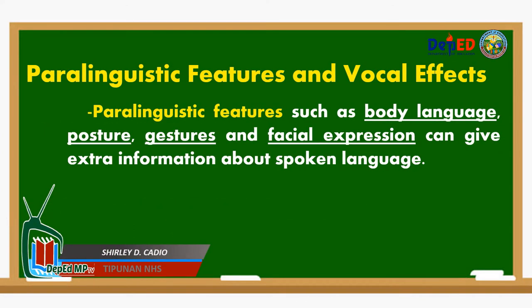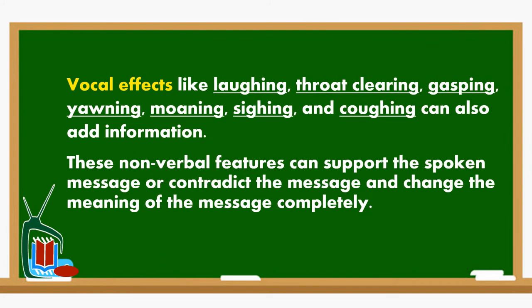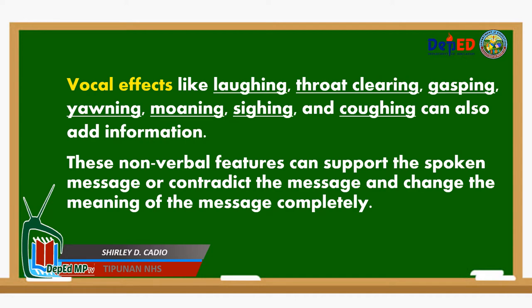Now, how about the paralinguistic features and vocal effects? What are they? Paralinguistic features such as body language, posture, gestures, and facial expression can give extra information about spoken language. Vocal effects like laughing, throat clearing, gasping, yawning, moaning, sighing, and coughing can also add information. These nonverbal features can support the spoken message or contradict the message and change the meaning of the message completely.